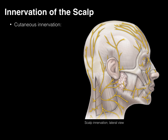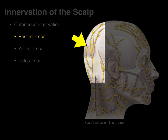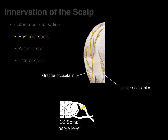Now the cutaneous innervation of the scalp — let's start with the posterior scalp. That innervation is by the greater occipital nerve and the lesser occipital nerve. Taking a cross-section of the C2 spinal cord and spinal nerve: the greater occipital nerve goes through the dorsal ramus, and the lesser occipital nerve goes through the ventral ramus, but they both go through the dorsal root. The lesser occipital nerve is associated with the cervical plexus, while the greater occipital nerve is a large nerve found in the back near the suboccipital triangle.